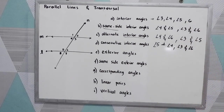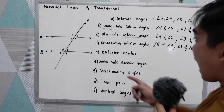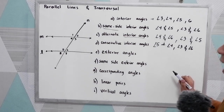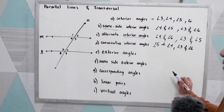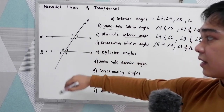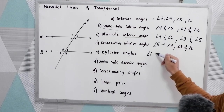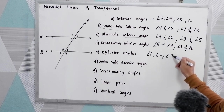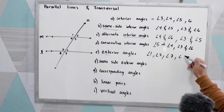Next, exterior angles. These are the angles formed outside the transversal and the parallel lines. So we have angle 1, angle 2, angle 7, and angle 8.